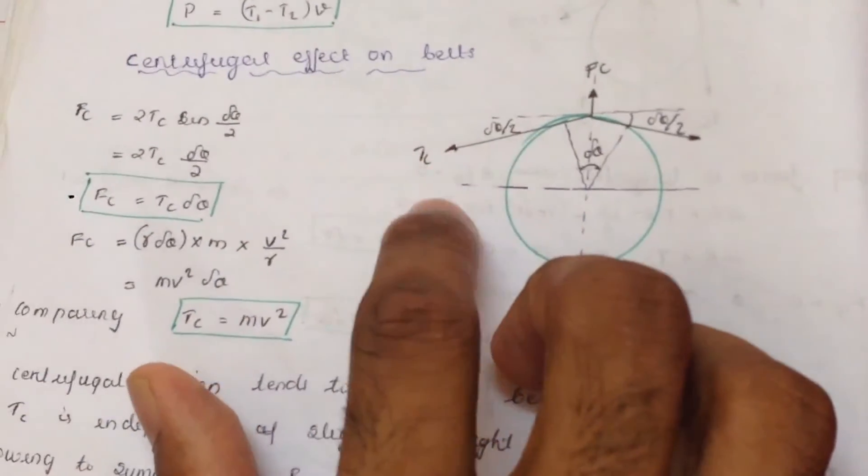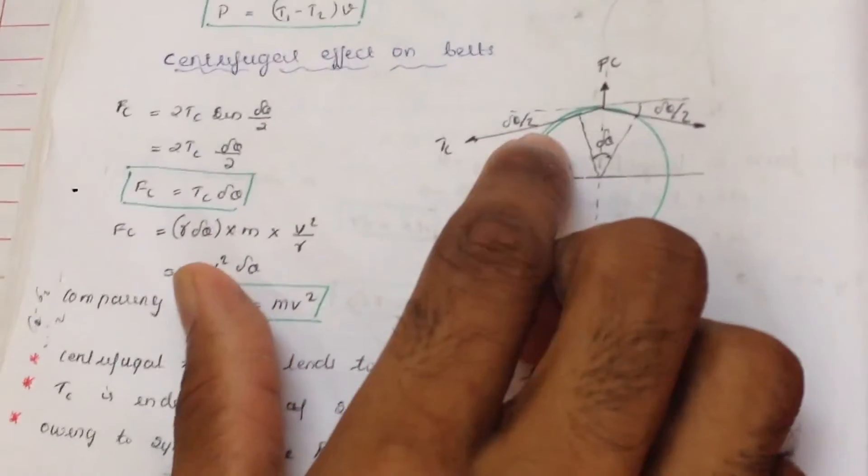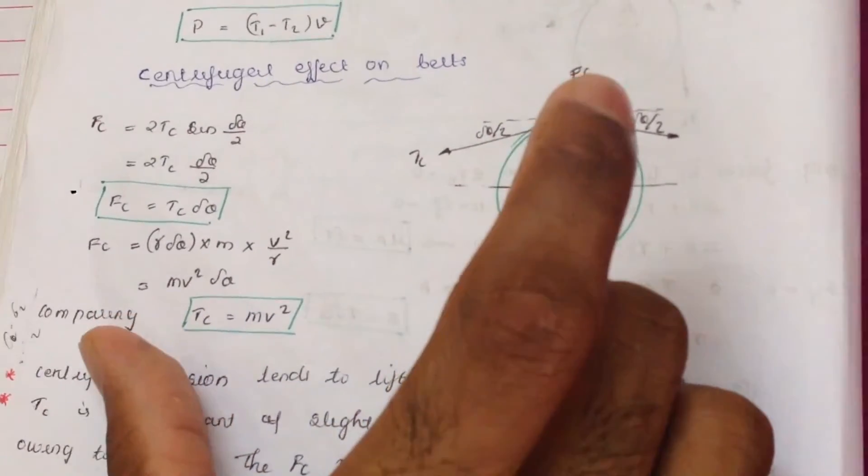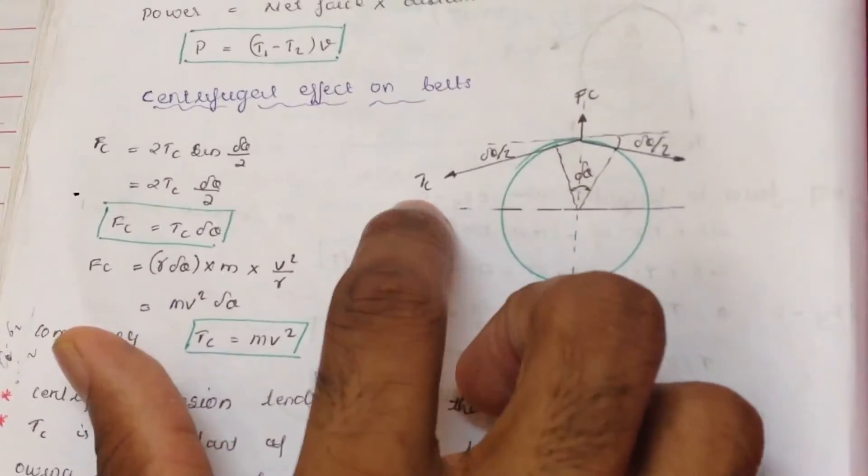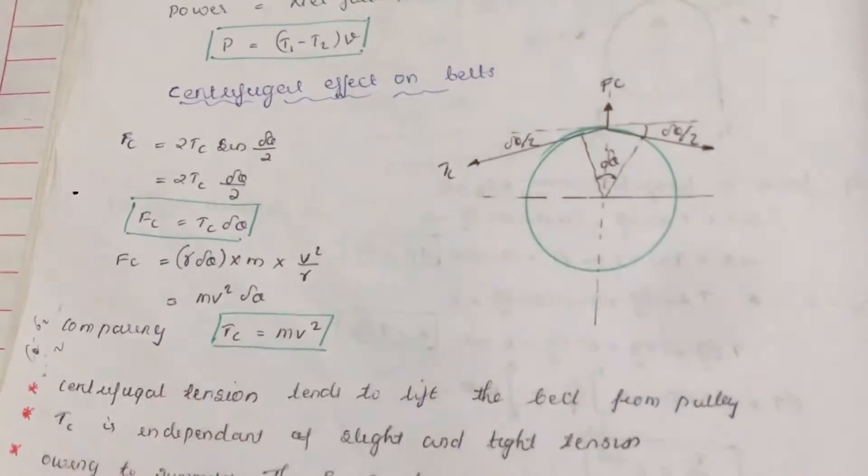tc is the tension caused due to centrifugal force and dtheta by 2 is the angle between the radial direction and tc. dtheta is the total angle between them.